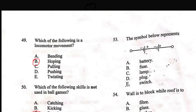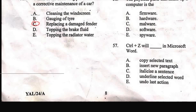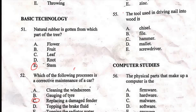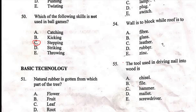Question 53: 'The symbol below represents what?' Options are: A) battery, B) fuse, C) lamp, D) plug, E) switch. This symbol represents a battery. Whenever you come across this symbol, just know that they are talking about a battery.